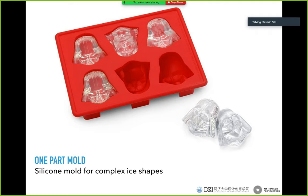Then you have one-part molds with complex shapes — for example a Darth Vader helmet which has many faces. You can create an object with such a complex shape because the mold is flexible. By deforming the silicone mold you can release the object. This is the material we are going to use: silicone rubber. You can push it, deform it, and take out your object.